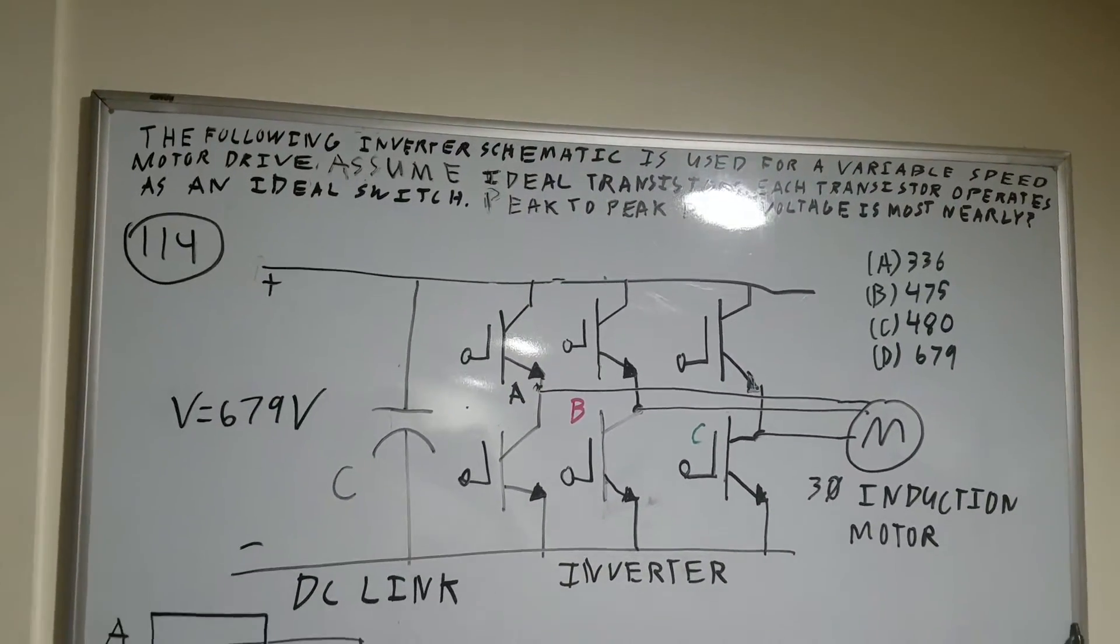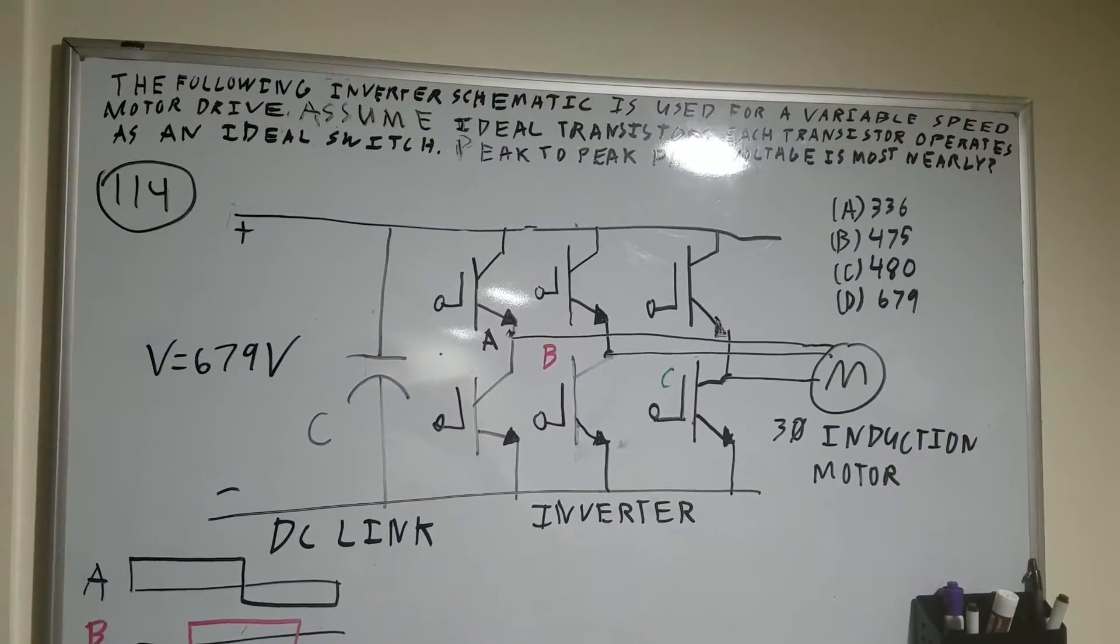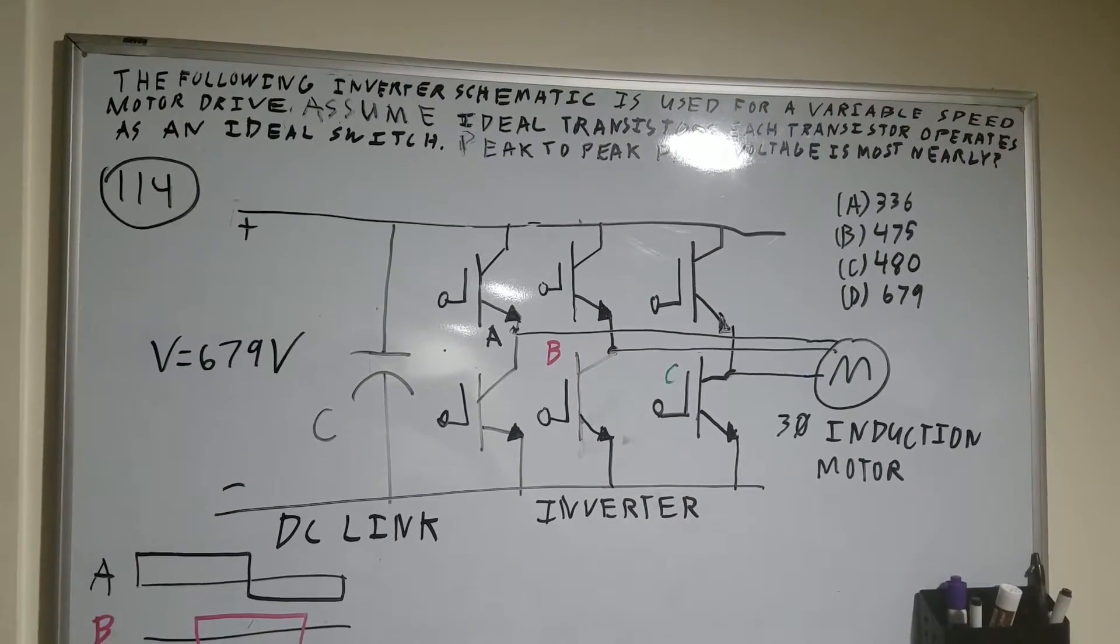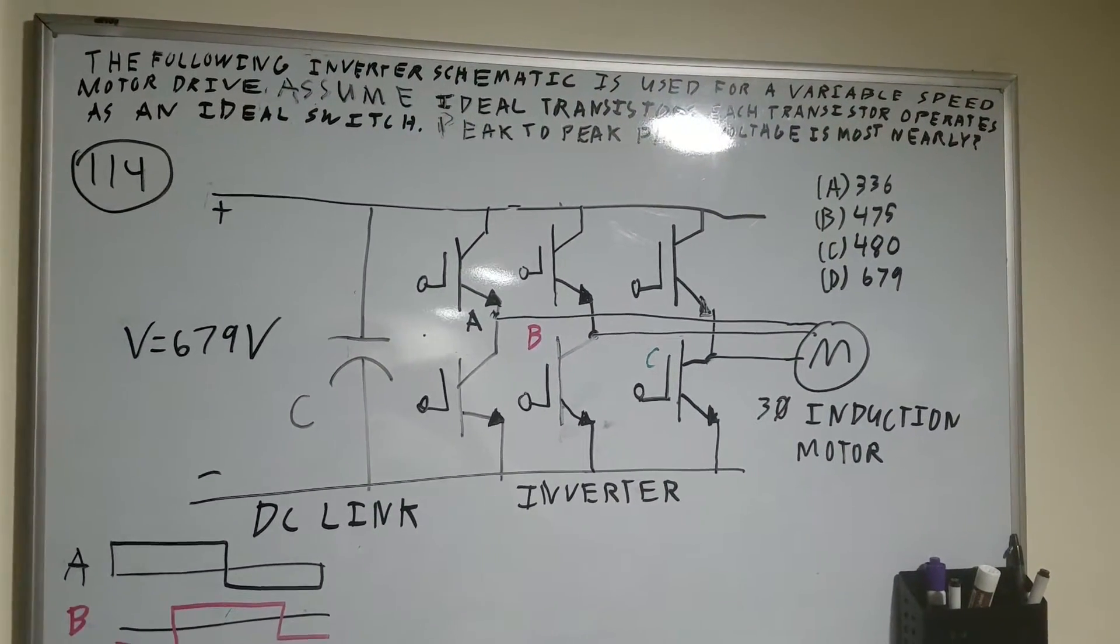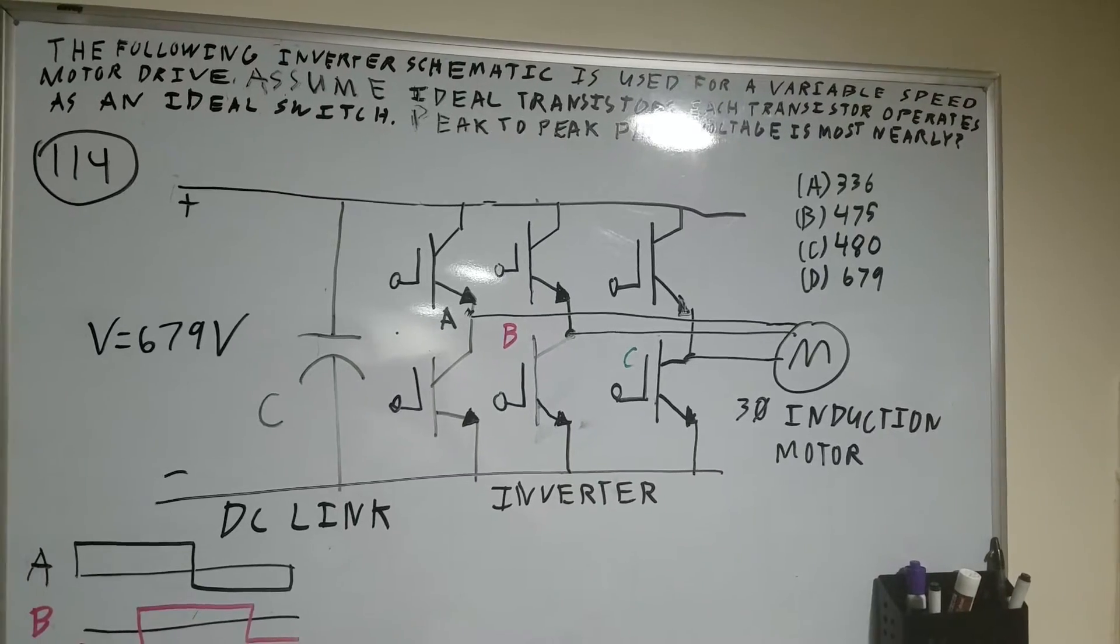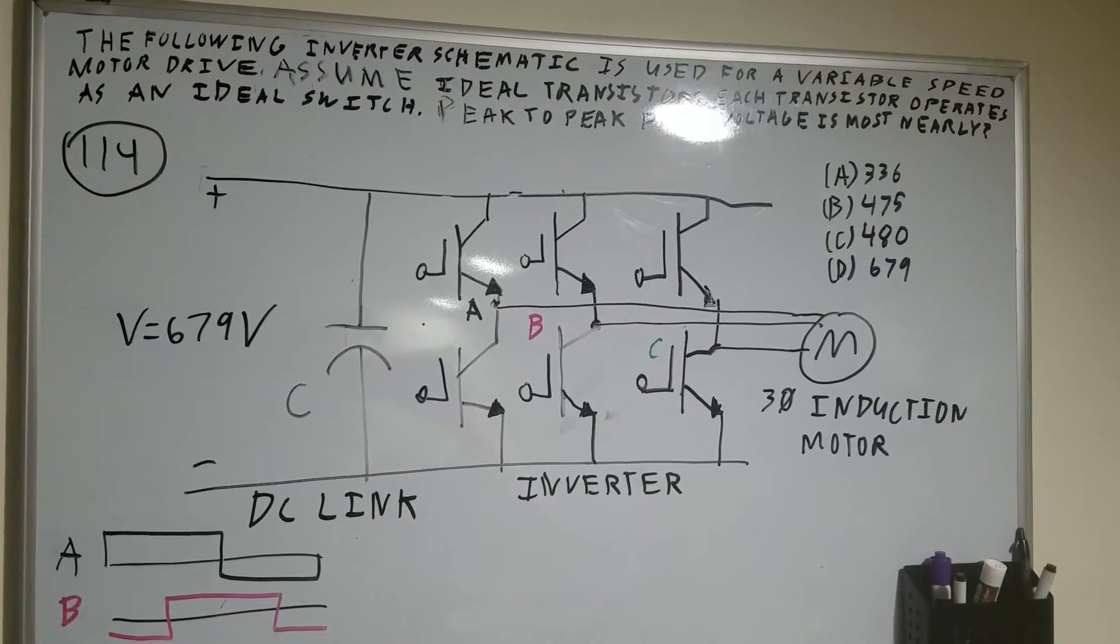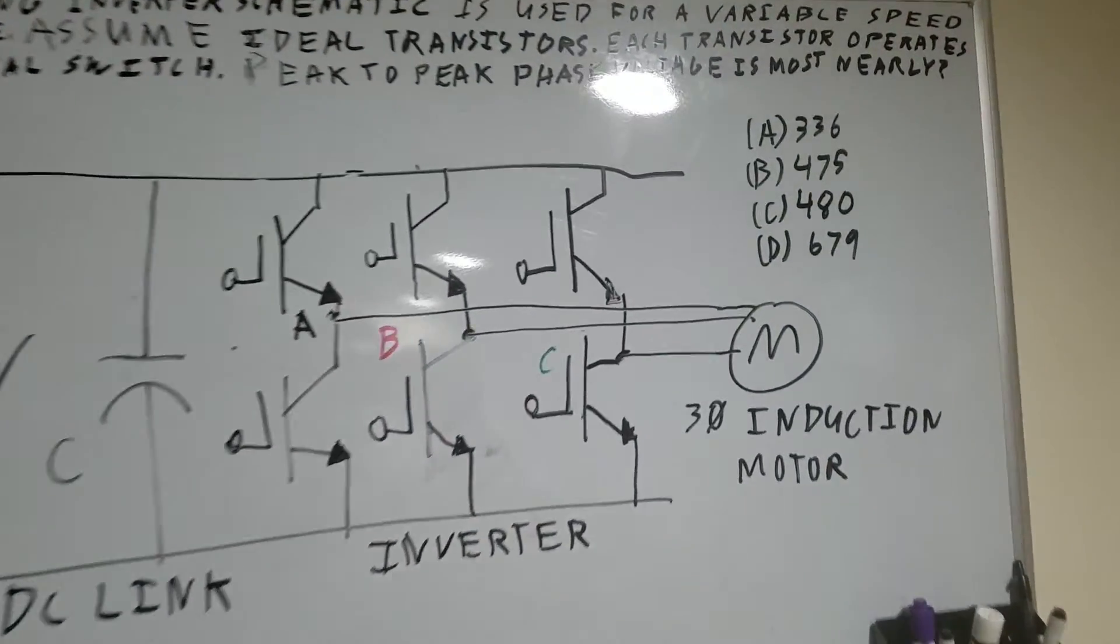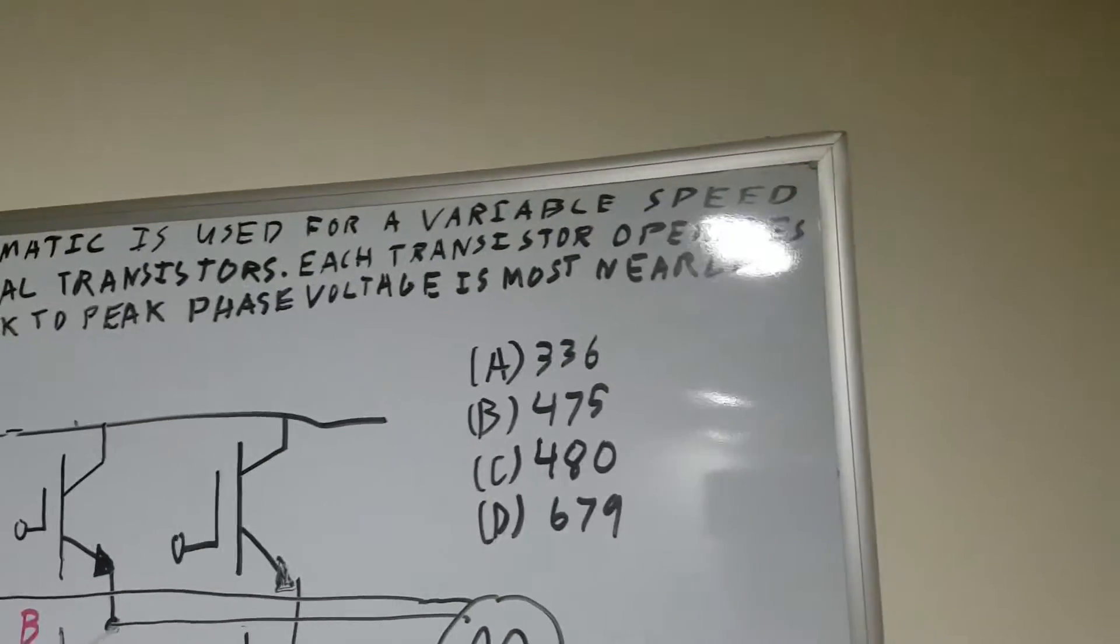The question is the following inverter schematic is used for a variable speed motor drive, assume ideal transistors, each transistor operates as an ideal switch, peak to peak phase voltage is most nearly.